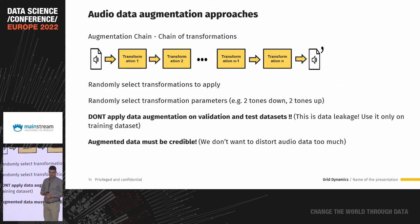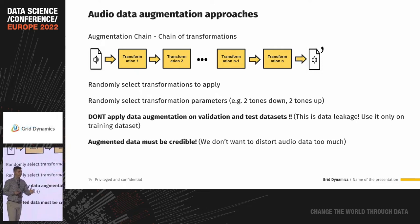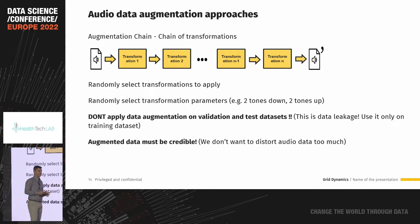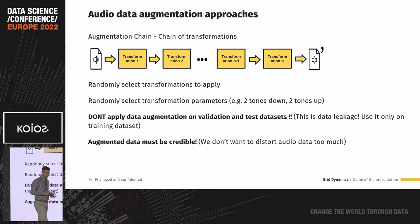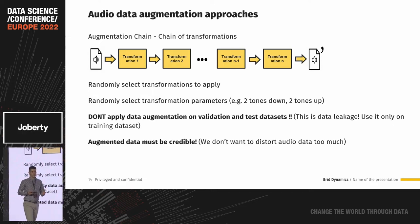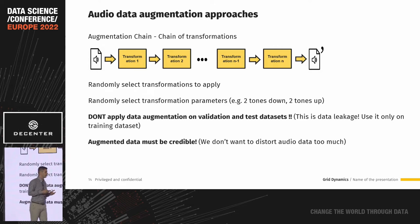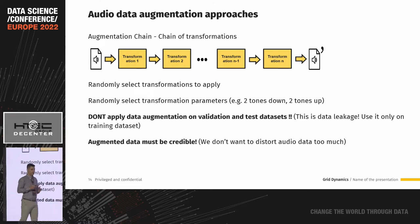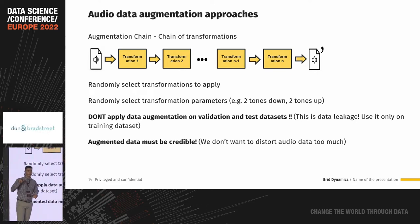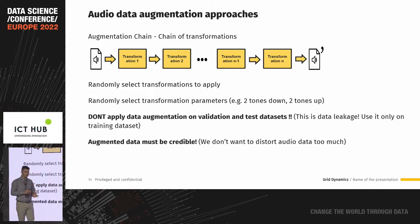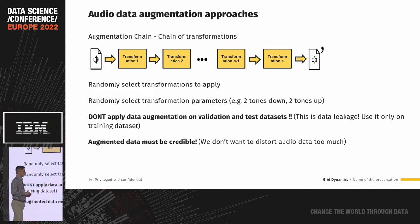This sequential approach is also known as an augmentation chain. A good practice is to randomly select these transformers — from n transformers, in one run you might pick three, in the next five, and so on. We can also randomly pick transformer parameters. For example, when augmenting a voice database, we can vary pitch frequency, increasing or decreasing it within a defined range — say two tones up or two tones down — and randomly pick the step, such as a full tone or semitone.